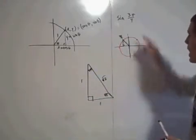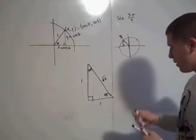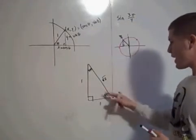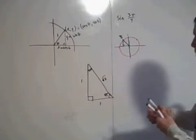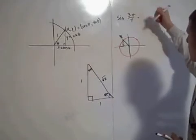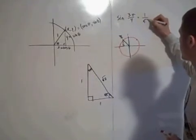So you're trying to find the sine of this. So the sine of 3π/4, here's your reference angle. So it's opposite, which is 1, over hypotenuse, which is root 2. So the sine of 3π/4 is 1 over the square root of 2.